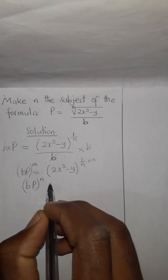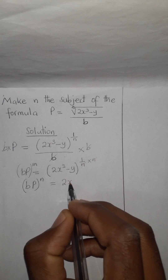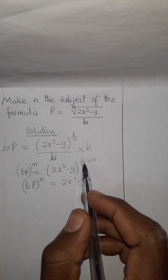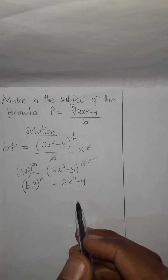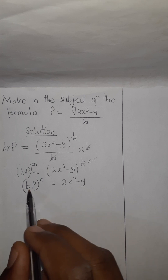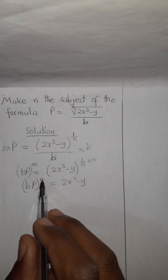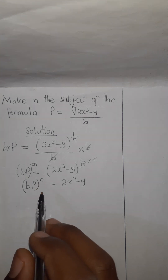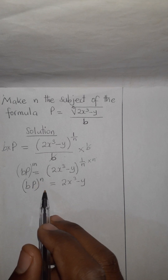b in bracket to power n equals — this one cancels this — so we are remaining with 2x cubic minus y. All this is raised to power 1, which is almost the same. After that, we can see that b, put in brackets, simply means that each term inside is having this power. So make sure that if you like to remove this bracket, you should put each term inside having power n. But that one is not a big deal.